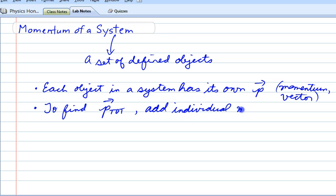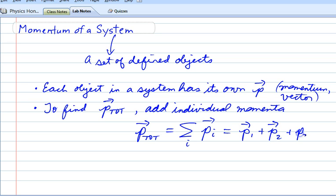We're simply going to add the individual momenta. If you want to get fancy, we could say that the total momentum of a system as a vector is the sum over each object of the individual momenta. So what that means in real life is momentum of object 1 plus momentum of object 2 plus momentum of object 3, and so on.